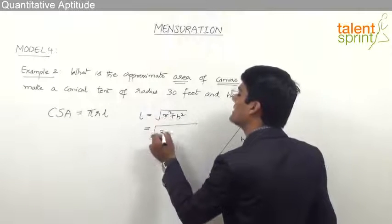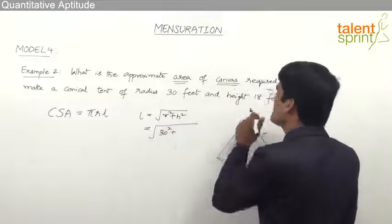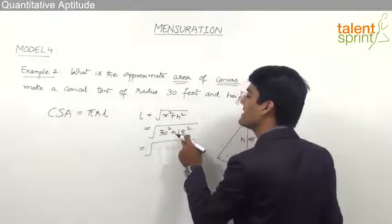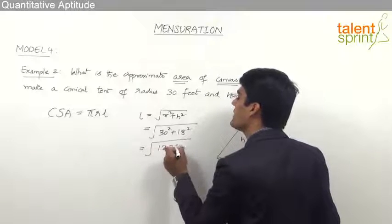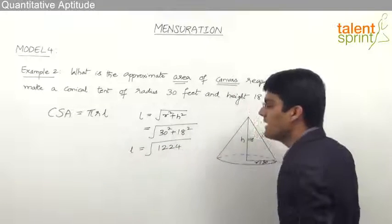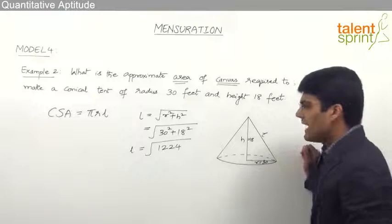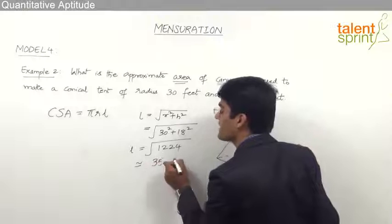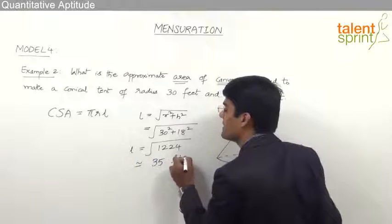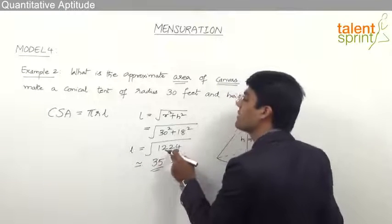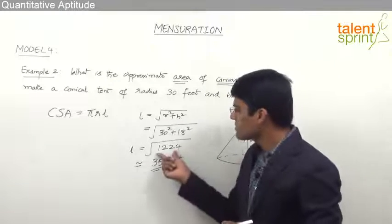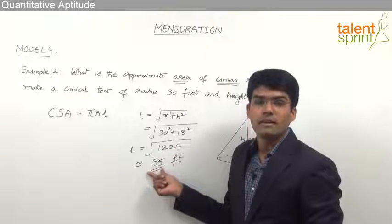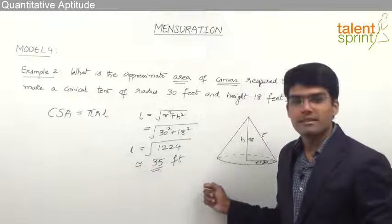Substituting r = 30 and h = 18: l = √(30² + 18²) = √(900 + 324) = √1224. √1224 can be approximately taken as 35, because 35² = 1225, which is very close to 1224. So approximately, the slant length l = 35 feet.